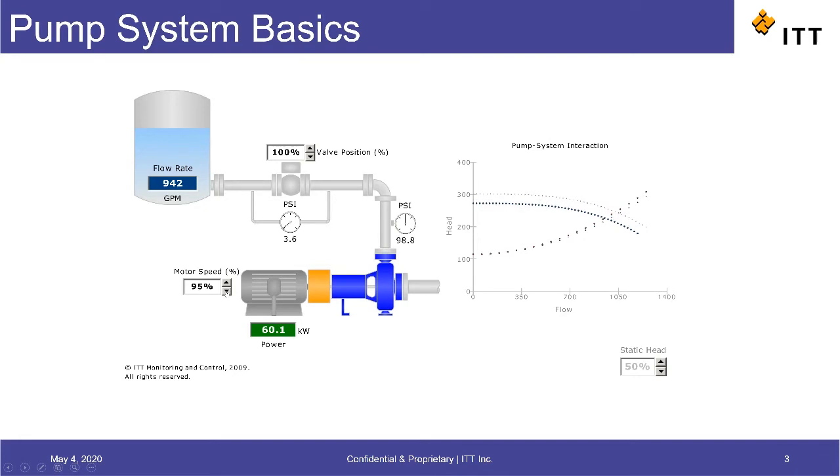So what happens is we leave the system curve in its original shape with the discharge valve fully open. And as the motor speed and therefore the pump speed come down, we're shifting the pump curve down until it intersects with the system curve close to our desired flow rate.